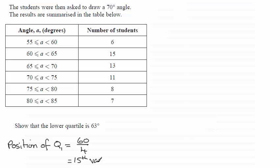So we need to locate where that 15th value is going to occur, which class interval. And if we construct a cumulative frequency table, we've got 6 students that measure the angle less than 60 degrees, 21 measure it less than 65 degrees. That's the total of 6 and 15. And you get all the other results carrying on.